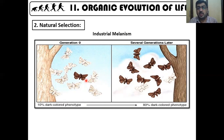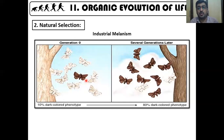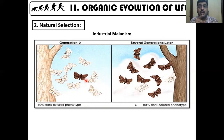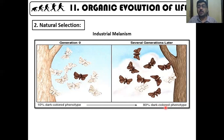After industrialization, pollution caused lichen to fall from the tree bark. The bark turned darker and collected carbon soot due to pollution. Now the opposite happened — the darker butterfly was camouflaged and the lighter one was seen and eaten by predatory birds. The population completely shifted: from about 10% dark-colored phenotype, the population went to about 80% dark-colored phenotype because of the change in environmental conditions. This is natural selection in operation.